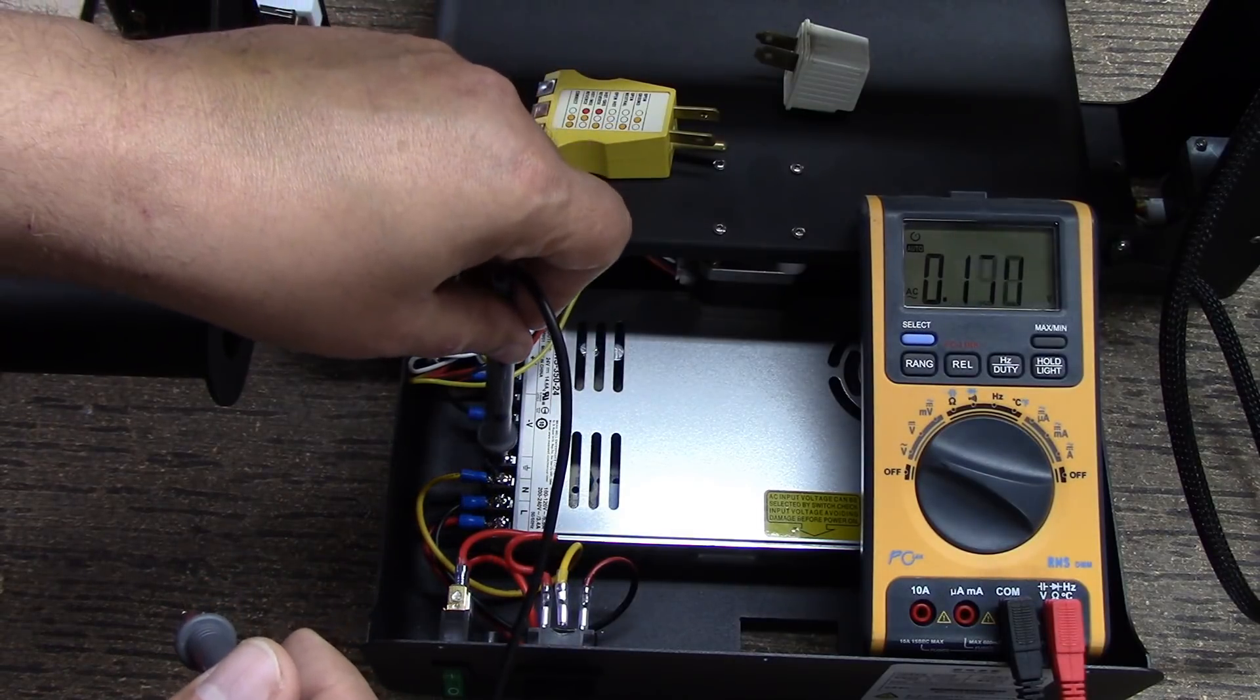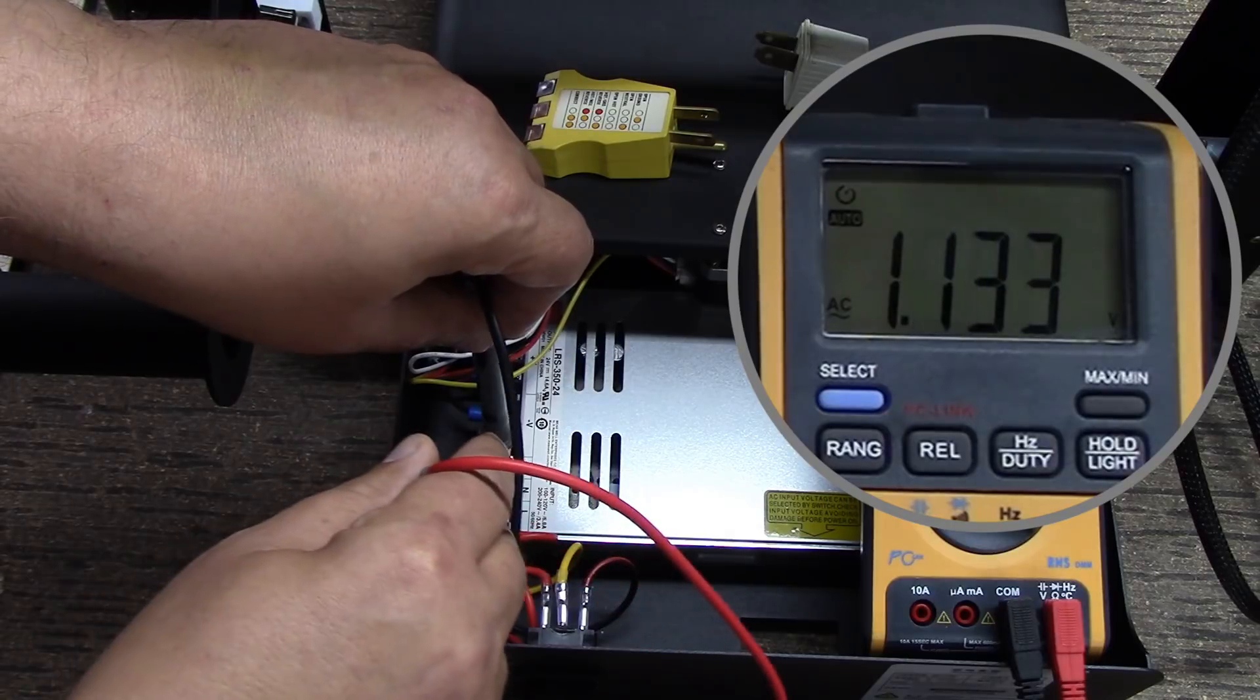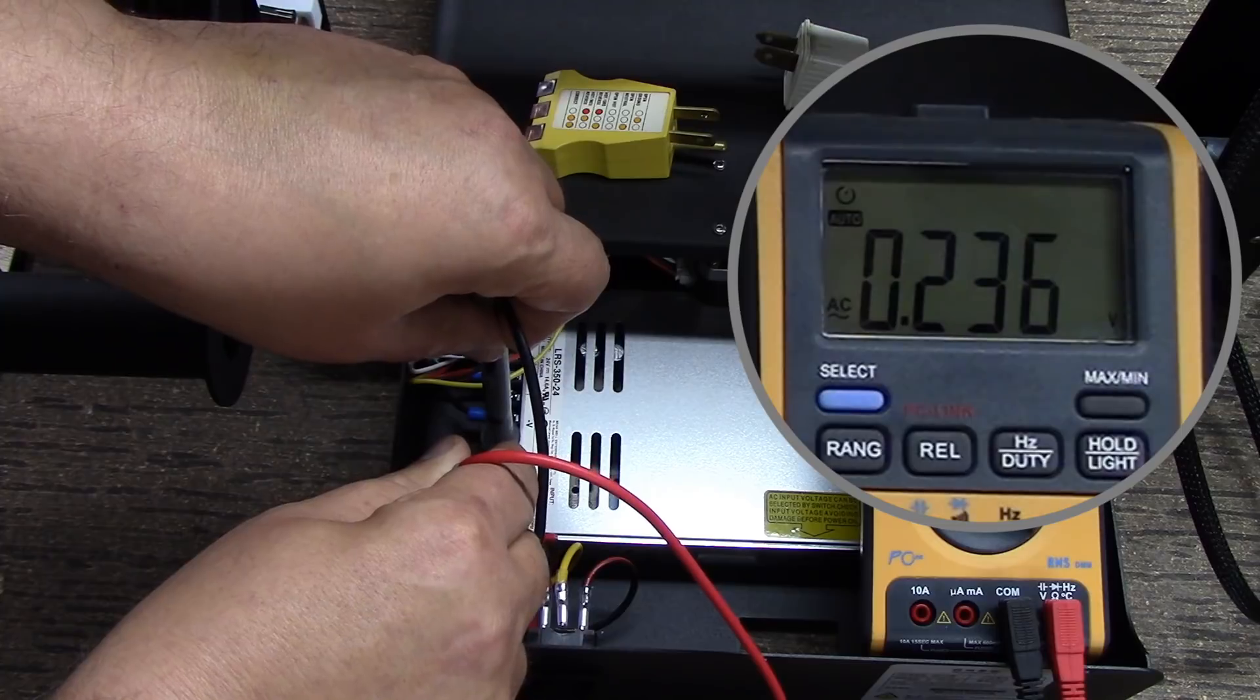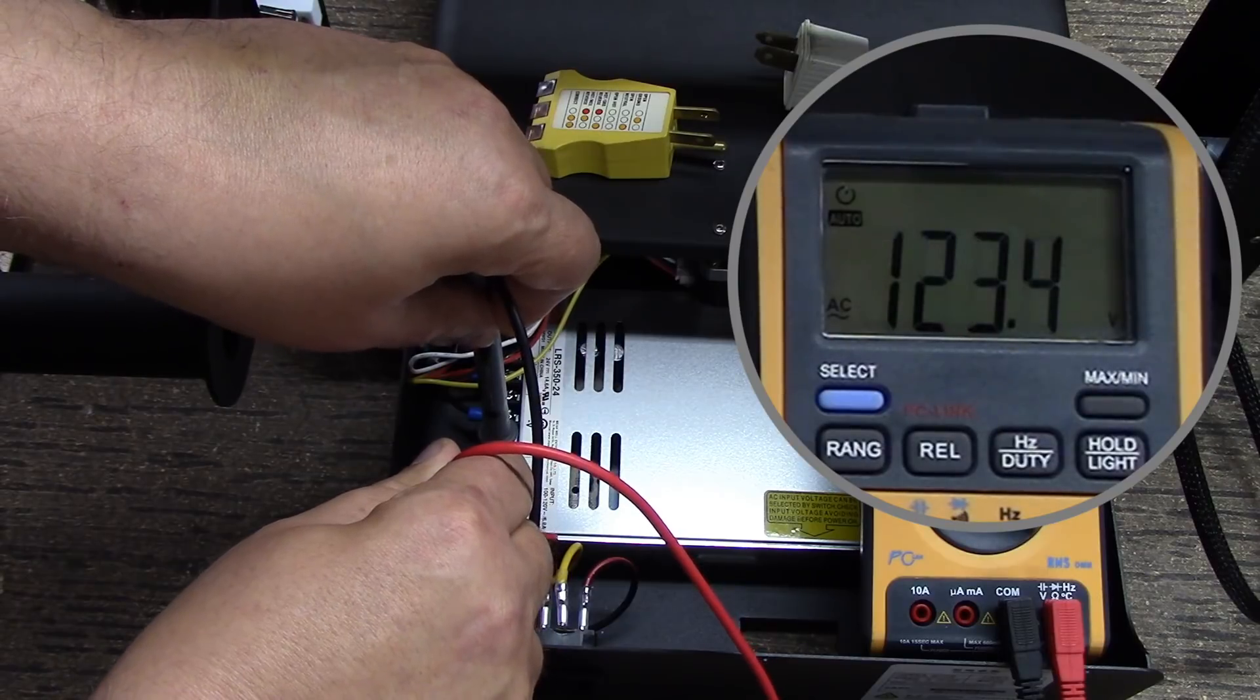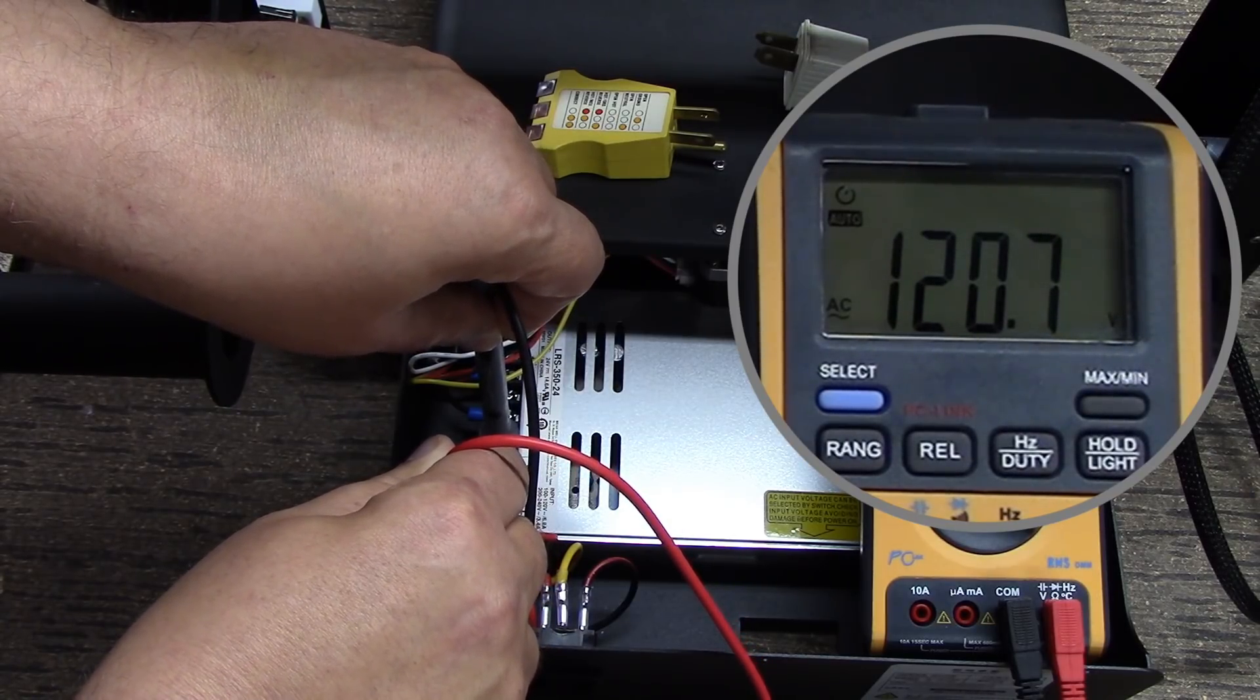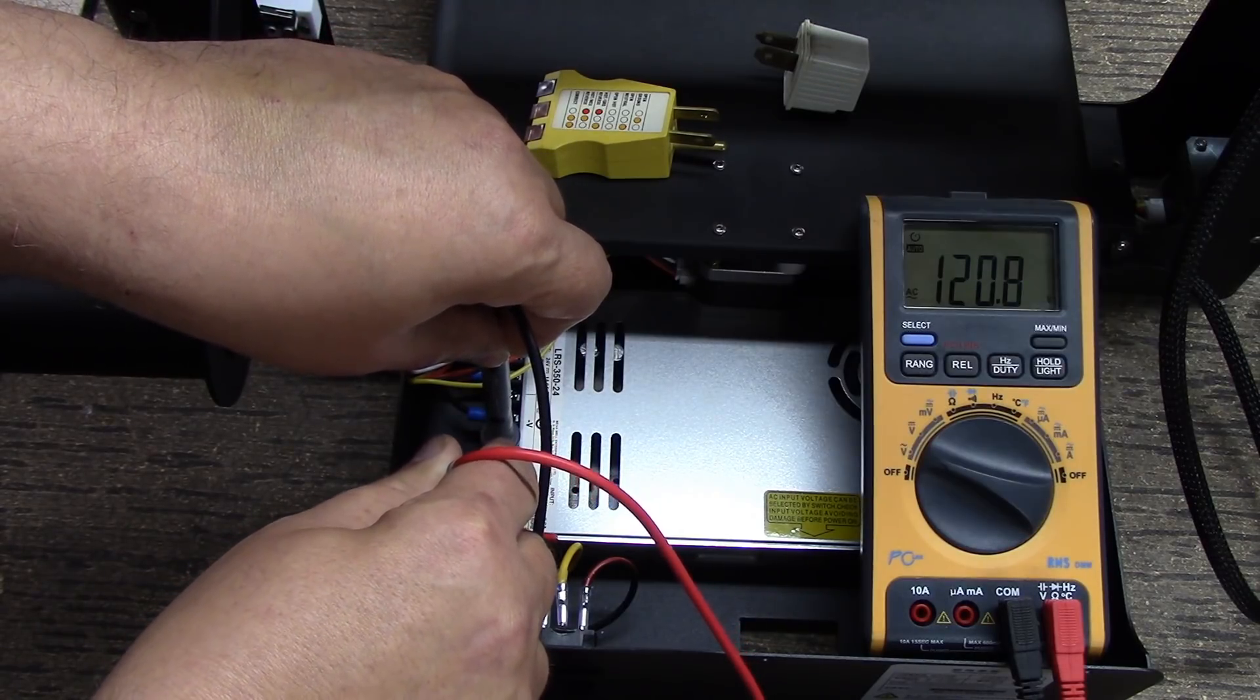What I'm going to do now is I'm going to go back and put my probe on the ground. Then I'm going to go back here to the neutral. You notice I basically have 0.2 volts, in essence nothing on the neutral. Then if I go back to the load, you see I'm running basically my whole 120 volts on this. In other words, the Y capacitor is bleeding off the ground.